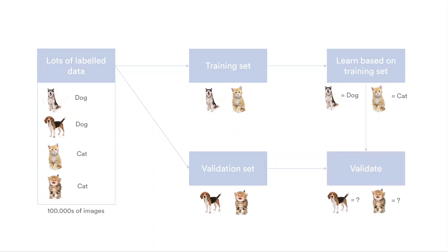With a trained model, you take your validation set and show an image of a dog — and you know this is supposed to be a dog — and you see what the model does. Is the model actually saying this is a dog? Is the model saying it's a cat? You do this for all these images and then calculate the accuracy. If you're not happy, you go back and iterate over this and start it all over again. And if you're happy, you have your final model, trained and ready to put into the field — which brings me to inferencing.